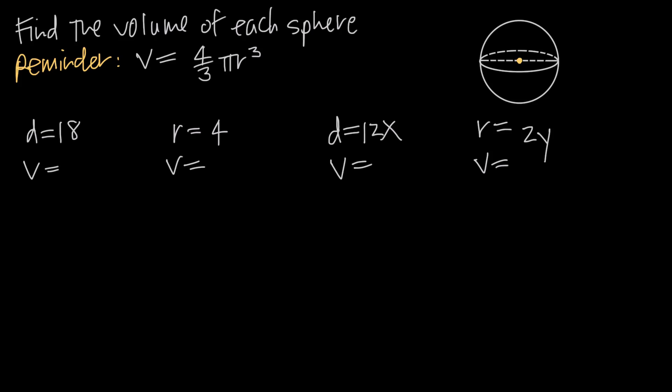In this video, we're talking about how to find the volume of a sphere. When we want to find the volume of a sphere, we always use the same volume formula. Volume of a sphere is going to be equal to 4/3, 4 over 3 times pi r cubed, where r is the radius of the sphere.